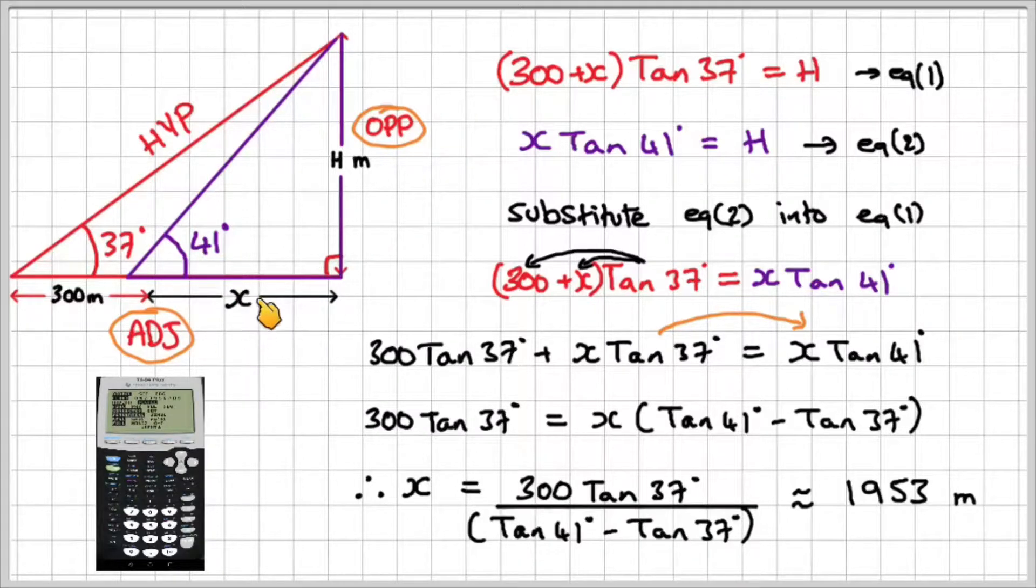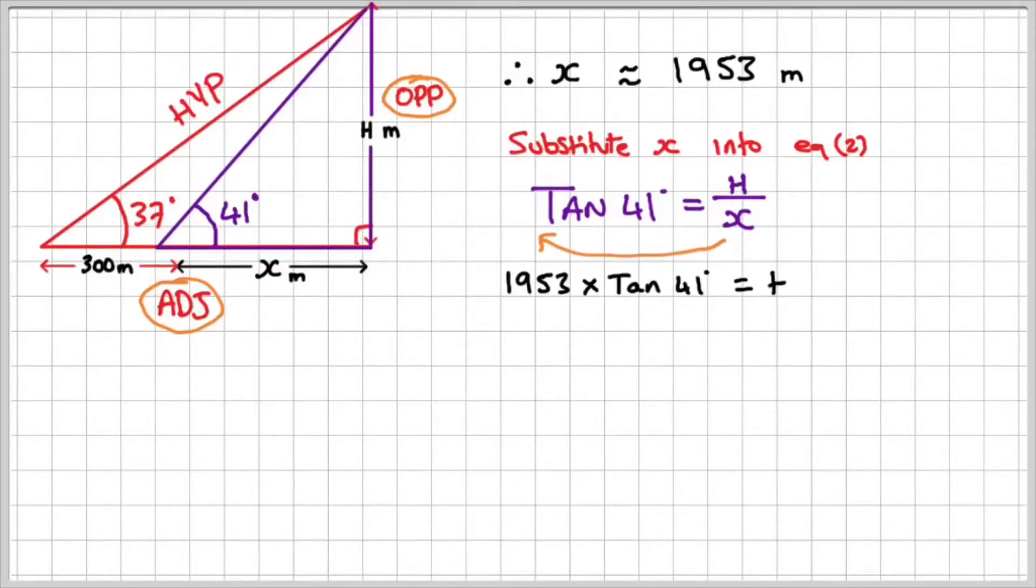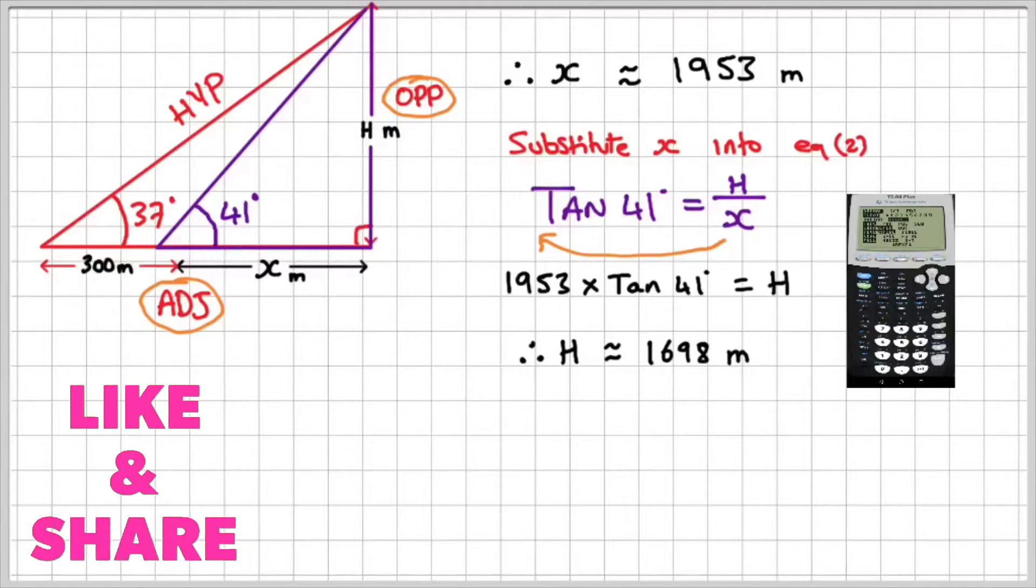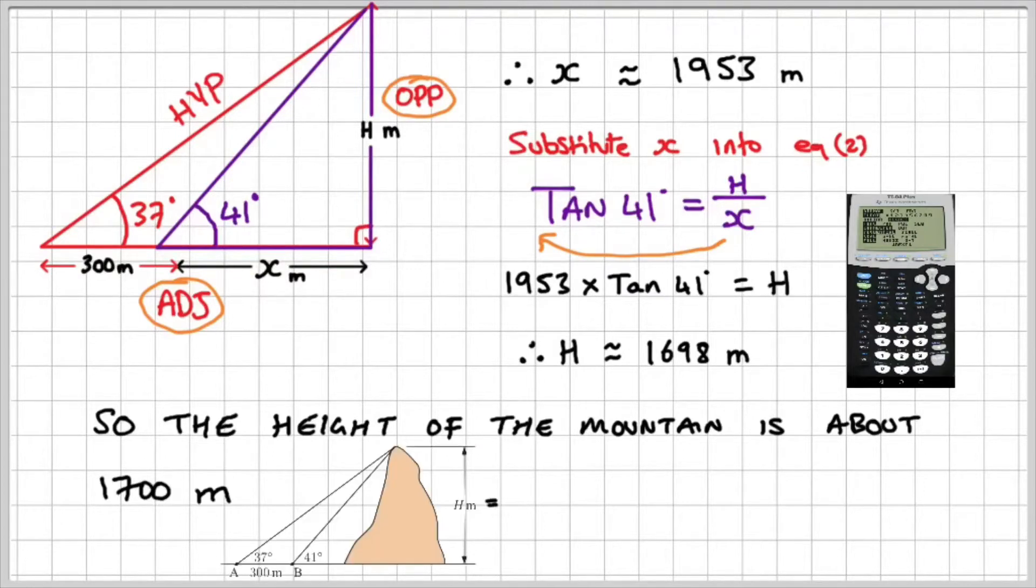So that gives us the value of x. We still need to work out the height of the mountain. So what we can do is we can substitute the value of x into equation two. And just to remind you, equation two is tan 41 is equal to h over x. Now if I move the x on to the left hand side, I have 1,953 times tan 41. And so using my calculator, the height is approximately 1,698 meters. So I can write a statement that the height of the mountain is about 1,700 meters.